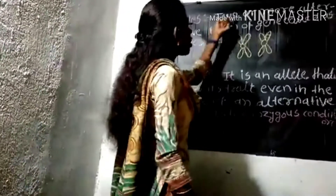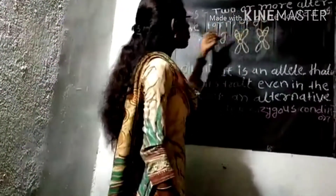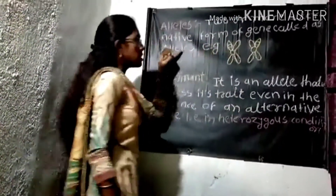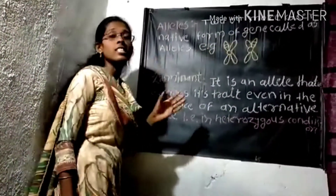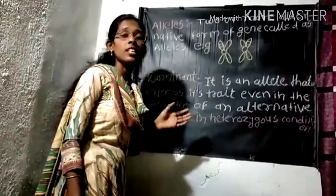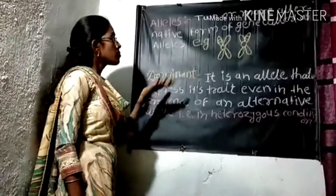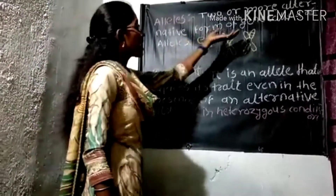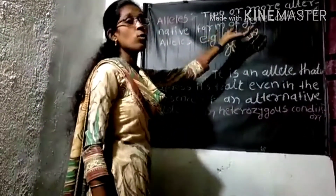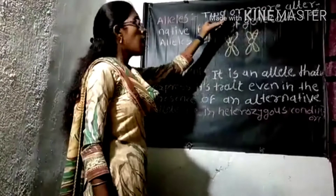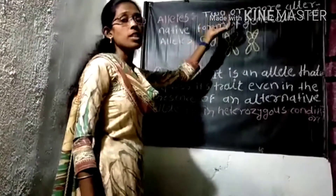The next term is 'alleles.' Alleles are two or more alternative forms of a gene, called alleles. Alleles are nothing but genes, but they are alternative forms of a gene.